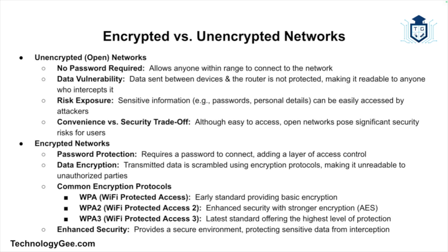Next, let's discuss the difference between encrypted and unencrypted networks. An unencrypted network, also known as an open network, does not require a password to connect — anyone within range can join. While open networks are convenient, they are insecure because data transmitted between the user's device and the router is not encrypted, meaning anyone within range can potentially intercept and view sensitive information like passwords and personal details.